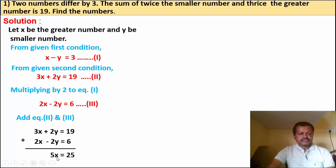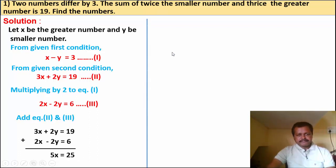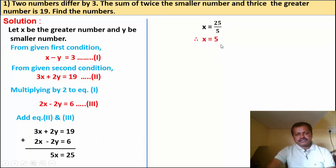So we get 5x is equal to 25. Solving: x is equal to 25 upon 5, therefore x is equal to 5.